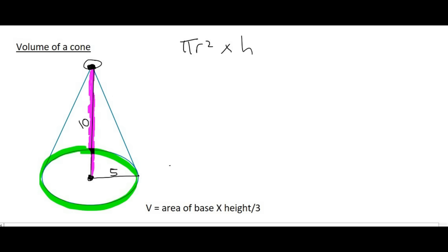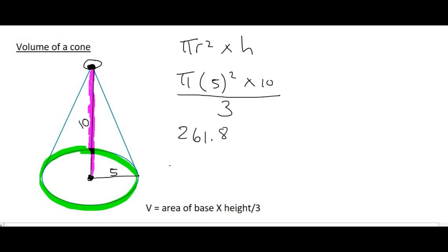Volume is more interested in the inside. So filling in the values: pi, the radius is 5, and the height is 10. Now if we did just that, it would actually be a cylinder, but because it's a cone, we remember to divide our answer by 3. If you do all of that on the calculator, you end up with a final value of 261.8. If the units were centimeters, we would use centimeters to the power of 3, because volume is always to the power of 3.